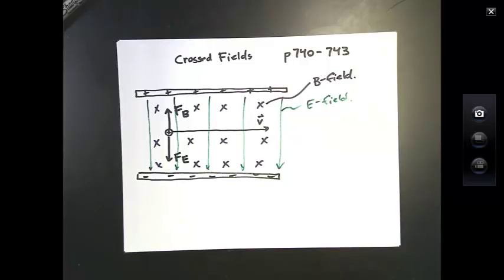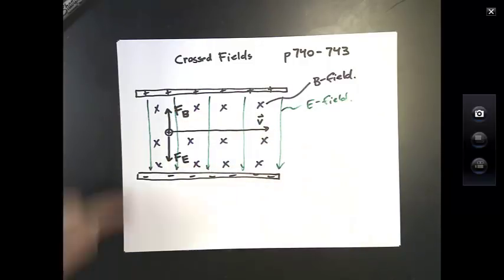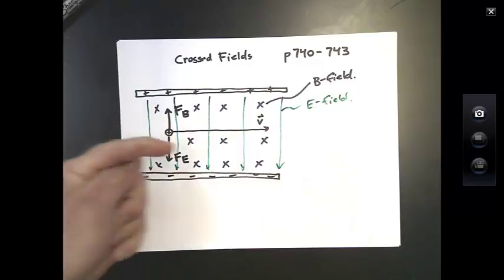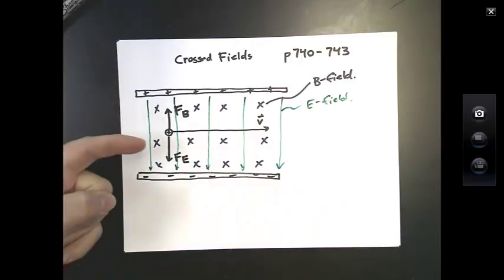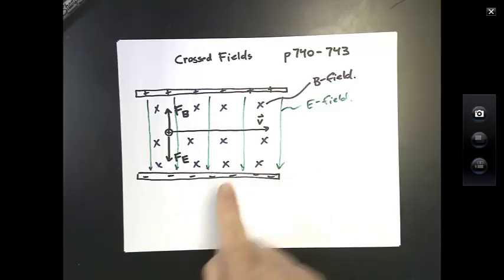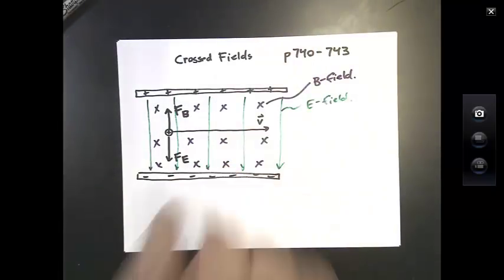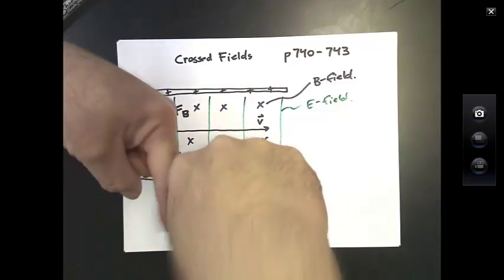The X's represent the ends of the arrows going into the page. So the X represents a magnetic field into the page. A magnetic field into the page, if the velocity is to the right, creates a force up. If we fiddle with these fields until these two forces are equal, this charged particle is just going to fly through as if nothing's going on, as if there's no fields present, because the effects of the two fields cancel out. Notice that the two fields are perpendicular to each other. We've got an electric field this way and a magnetic field into the page. That's why this is called crossed fields. The fields are crossed.